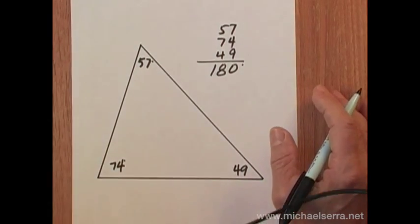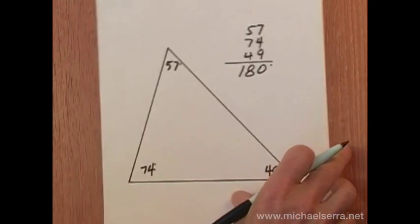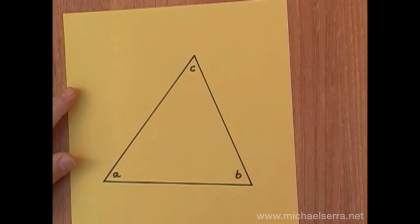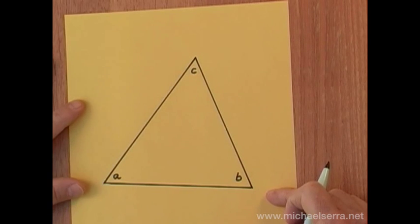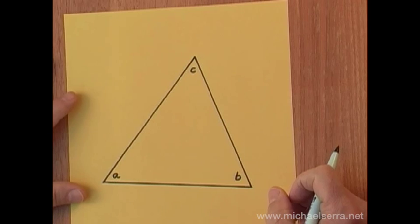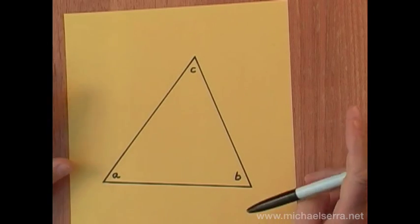Another approach is to take a triangle and cut out the triangle and then tear off the three angles and see how close we come to that same conjecture. So let's take a look.